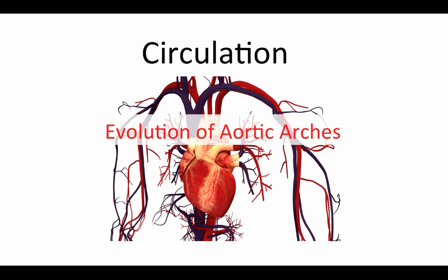By now you should have watched the web lecture on the different kinds of blood vessels and the web lecture on the organization of circulatory systems, and you should have a pretty good idea about how the circulatory system in general is laid out. The one part we left a little bit sketchy was the region around the gills and how this was really transformed in this transition from a single-circuit to a double-circuit circulatory system. So in this web lecture we're going to focus on that region and examine the evolution of these aortic arches.